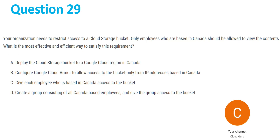Heading on to question 29. Your organization needs to restrict access to a Cloud Storage bucket. Only employees who are based in Canada should be allowed to view the contents. What is the most effective and efficient way to satisfy the requirement? Option A — deploy the Cloud Storage bucket to a Google Cloud region in Canada — will not be the answer, since people outside Canada would also be able to view the contents. Option B — configure Google Cloud Armor to allow access only from IP addresses based in Canada — is also not the answer, as Google Cloud Armor is used to prevent cyber attacks and the question does not require anything security related.